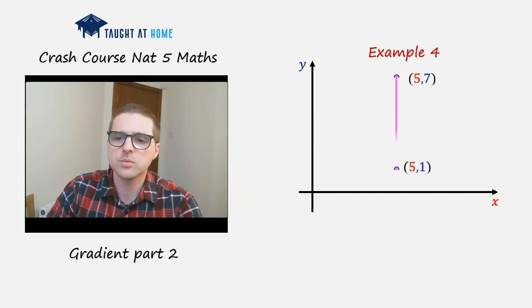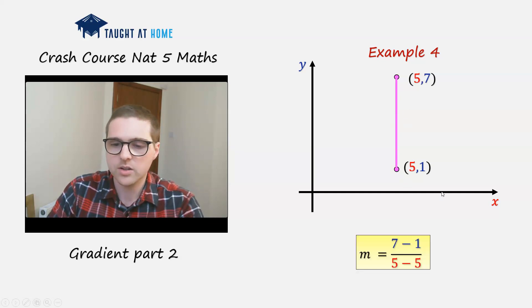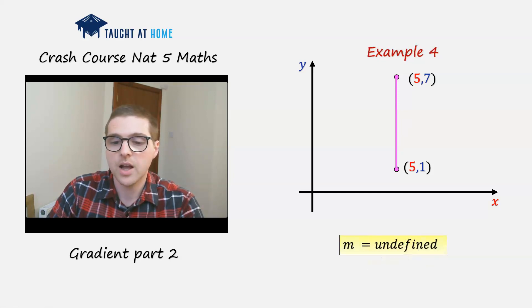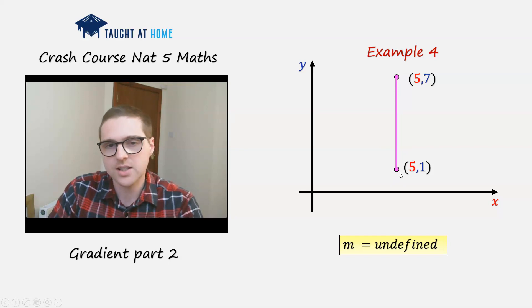Let's try this one. We've got a vertical, purely vertical line. Again, we've got a change in y but we don't have a change in x. So here the gradient is going to be 6 divided by 0, and we say that the gradient is undefined. So when there is no change in x and the straight line is just a vertical line, we say that the gradient is undefined.